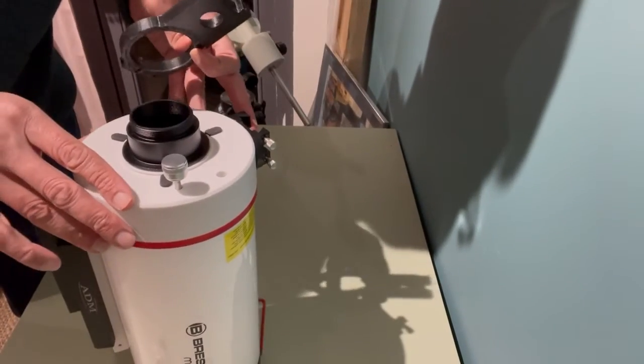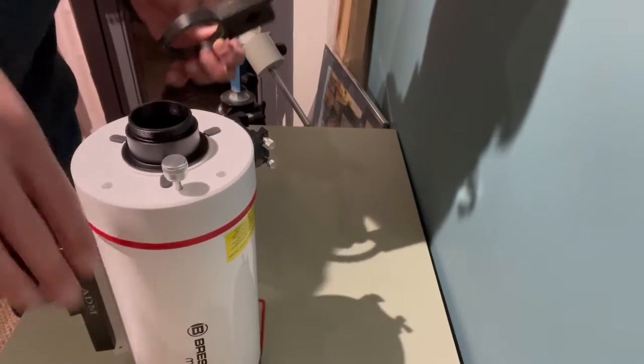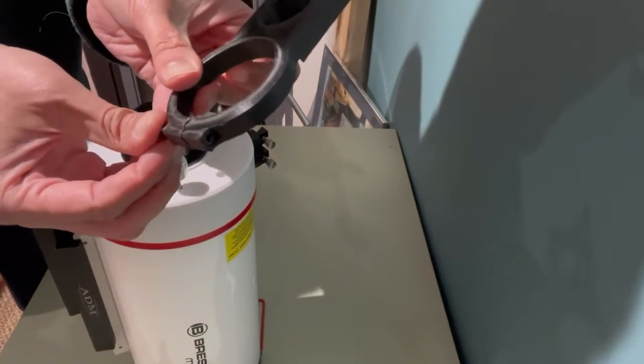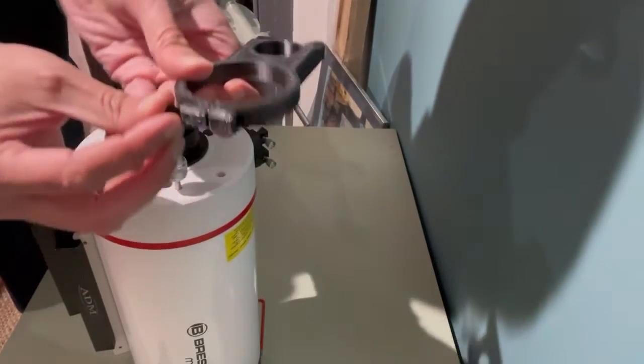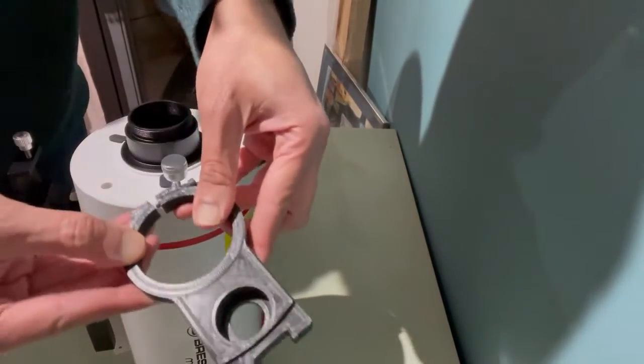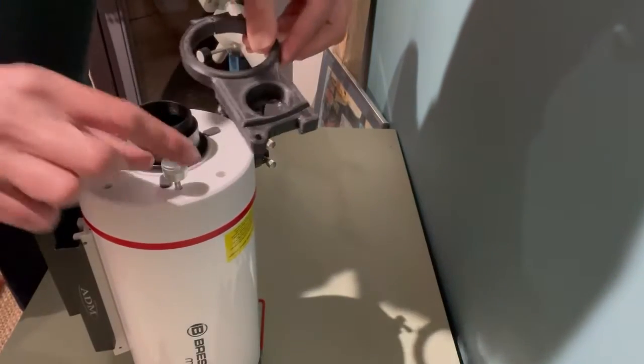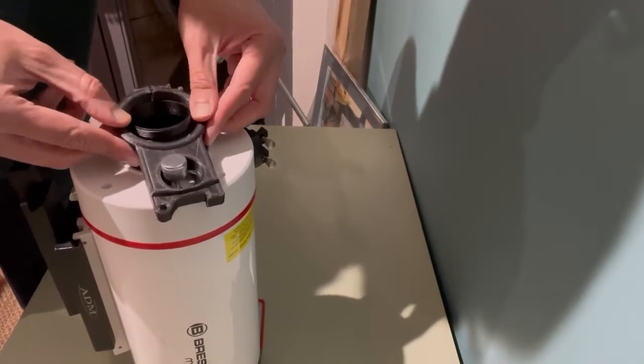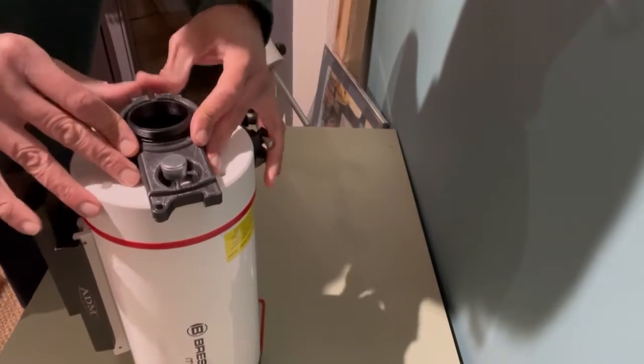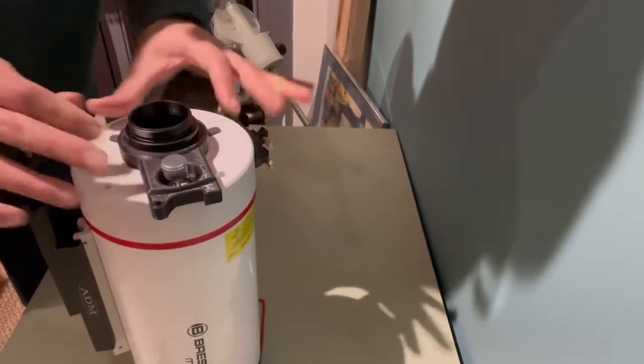This bit is easier if you keep the tube pointing down. I've loosened this screw completely out so it pulls apart. Take the focus knob, slide that over, and then you just pull it apart and it slides in.